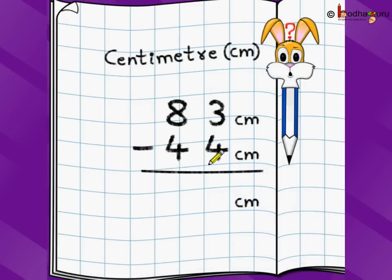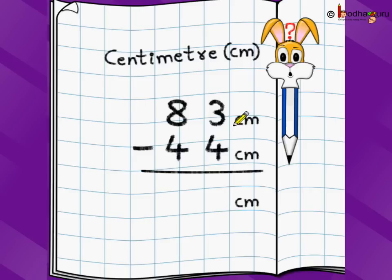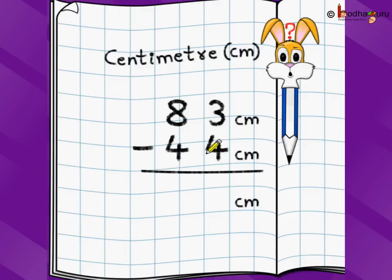Now let's take a problem with centimeter. 83 centimeter minus 44 centimeter. We write the two numbers just below each other, with the units also aligned, keeping the same unit throughout. We don't mix meter and centimeter. So centimeter below centimeter, and the answer is also centimeter. Now, 3 minus 4 — as we saw in our two-digit subtraction lesson with borrowing, 3 minus 4 cannot be done because you can't take away a bigger number from a smaller number. So what do we do? We do borrowing.